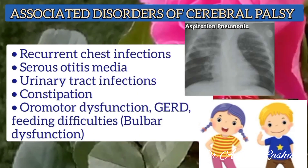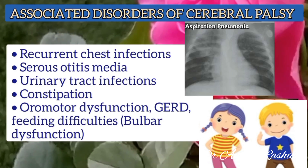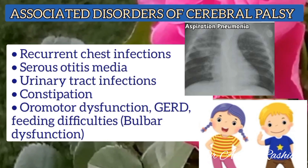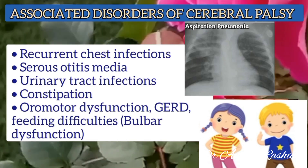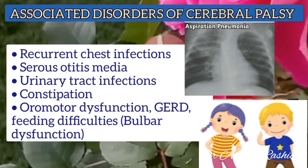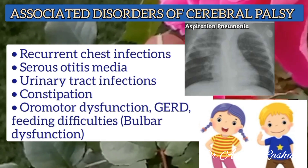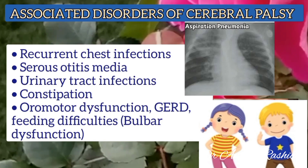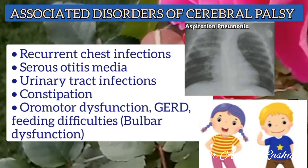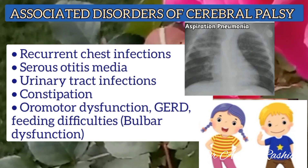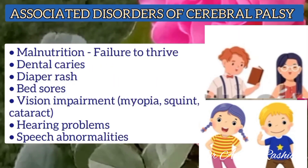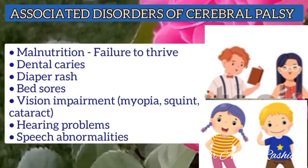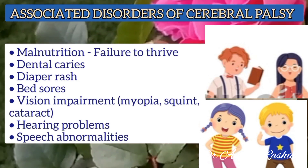Associated disorders of cerebral palsy include recurrent chest infections, serous otitis media, urinary tract infection, constipation, oromotor dysfunction, gastroesophageal reflux disease, and feeding difficulties due to bulbar dysfunction. There is also malnutrition, dental caries, diaper rash, bed sores, vision impairment, hearing problems, and speech abnormalities.